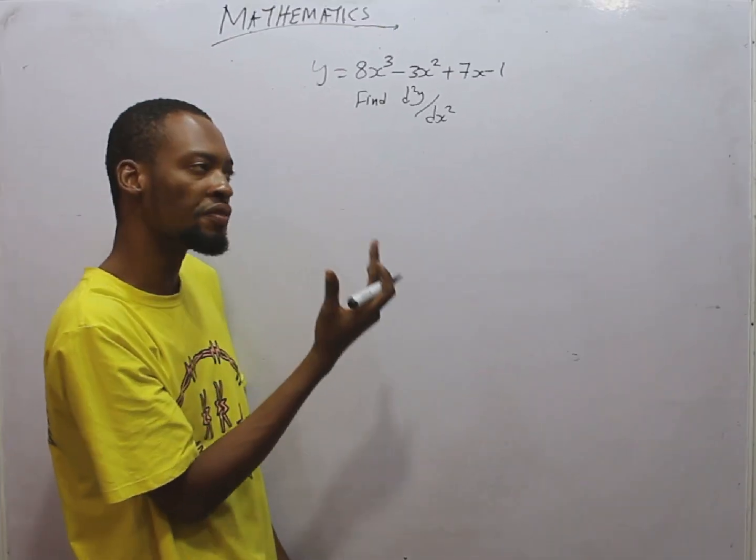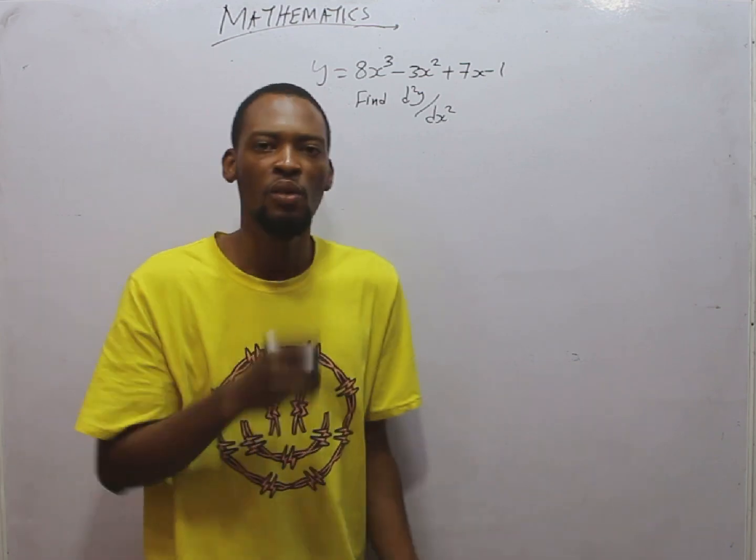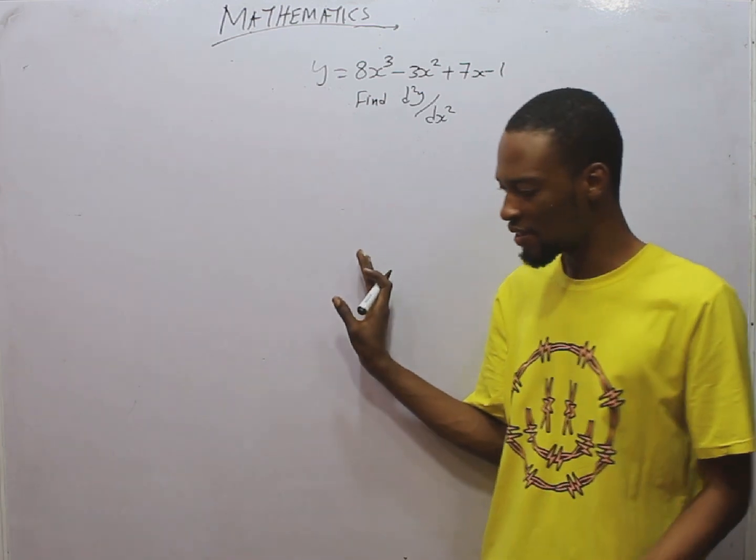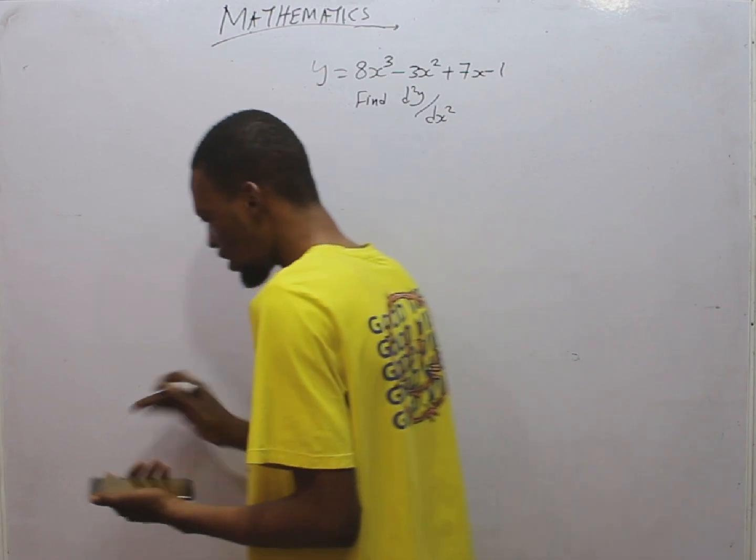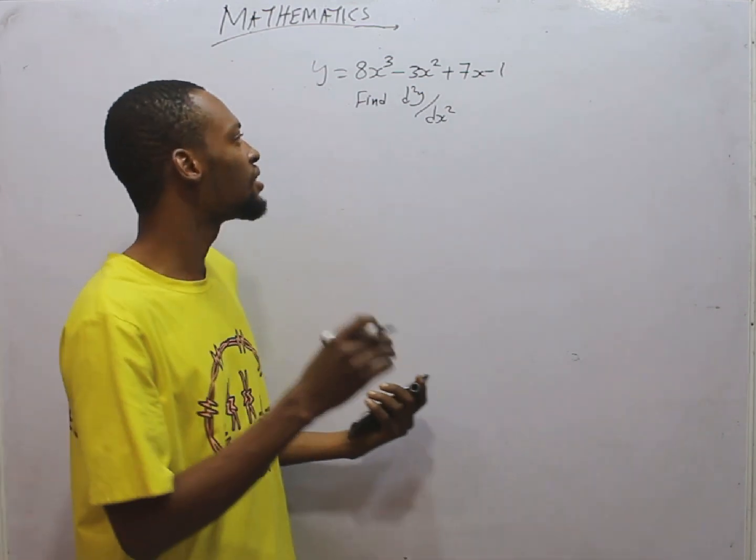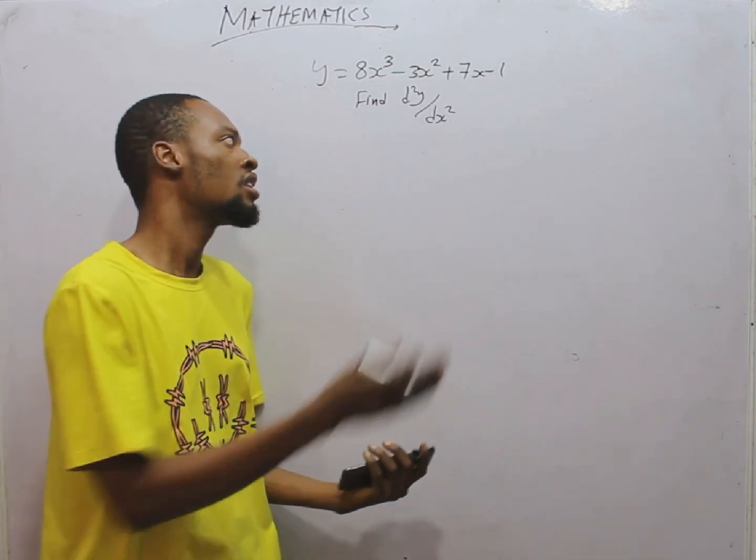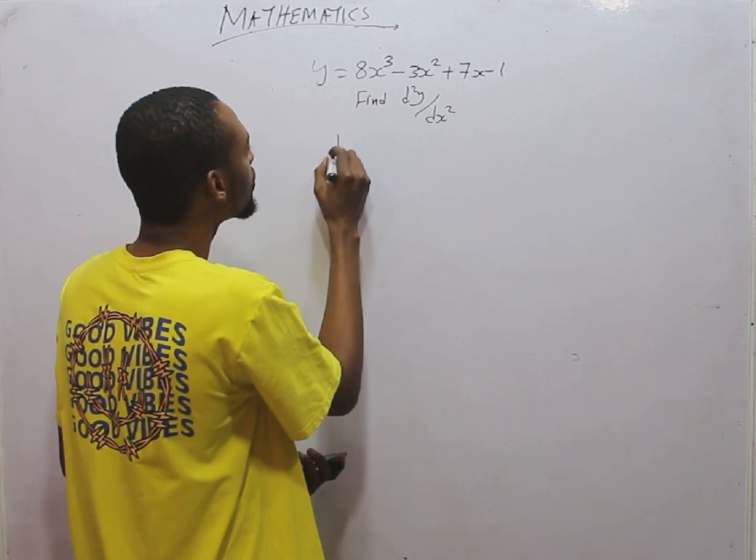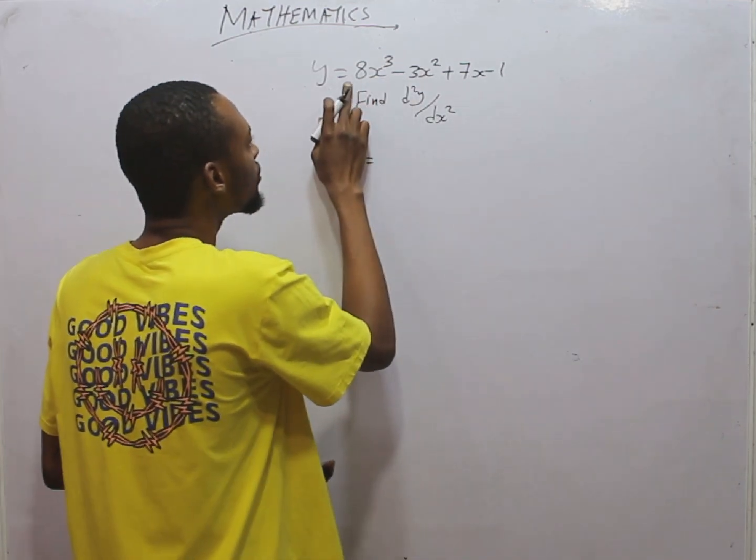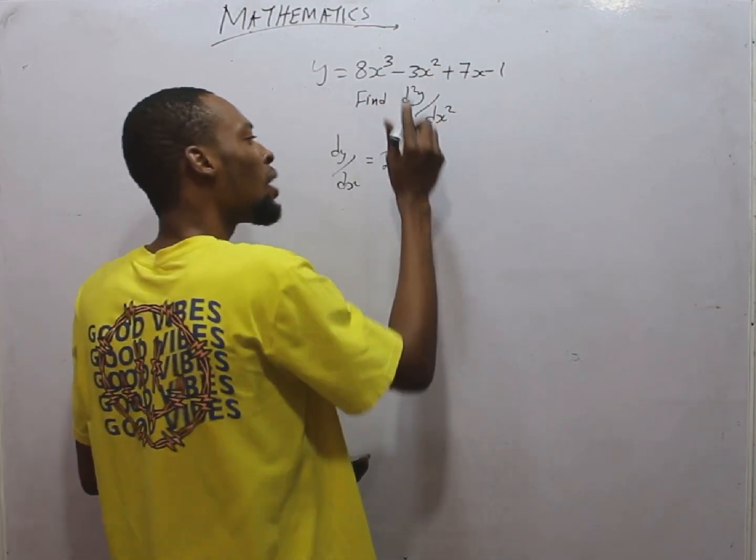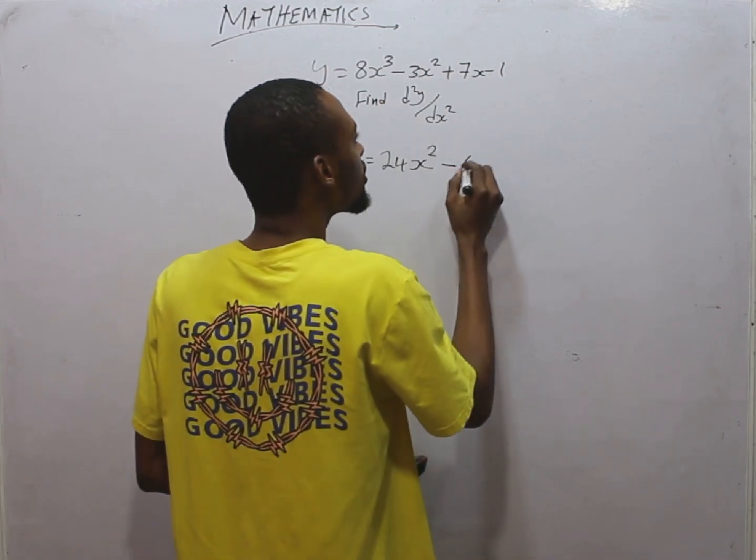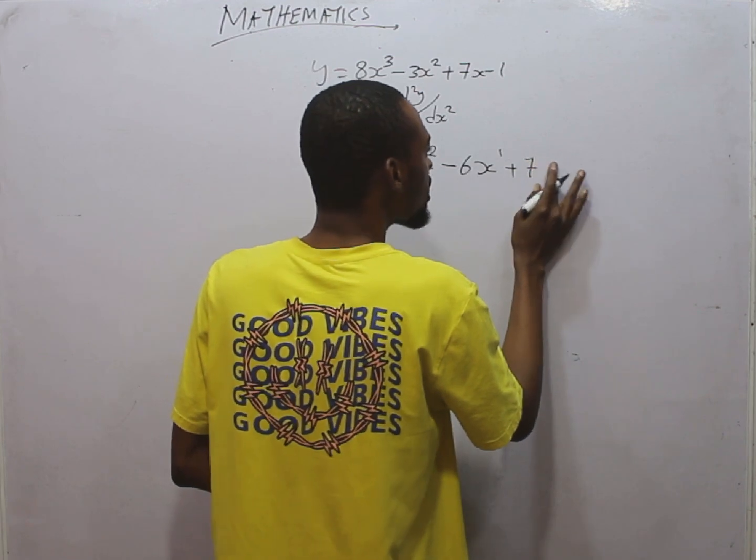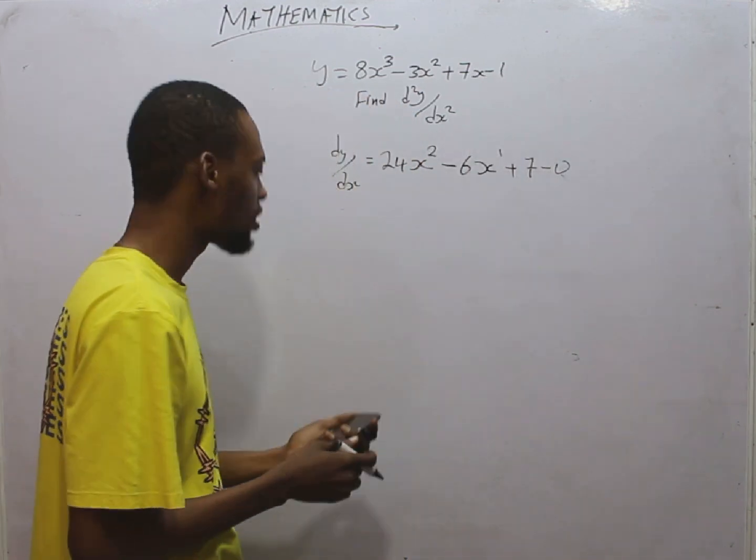Y equals 8S to the power of 3 minus 3S squared plus 7S minus 1. We are asked to find d squared Y over dS squared, which means find the second derivative. This is under higher derivative. If I say find dY dS, that is the first derivative. D squared Y over dS squared, second derivative. D cube Y over dS cubed, third derivative. This one simply means differentiate two times. That is what we are talking about. But for the first differentiation, dY over dS equals 8 times 3 is 24S, subtracting 1 from the power, squared, minus 3 times 2, 6S, 1 minus the power or the power minus 1, we are left with 1. Plus when you differentiate 7S you get 7 minus 0. When you differentiate constant you get 0. That is how to differentiate.